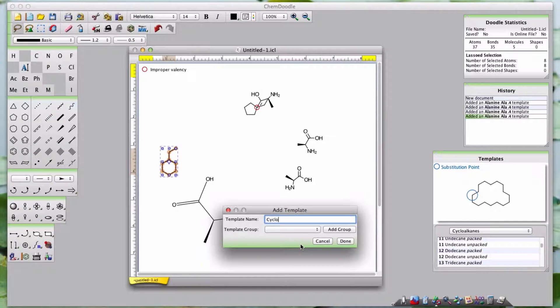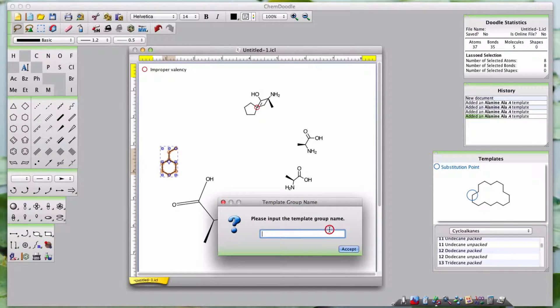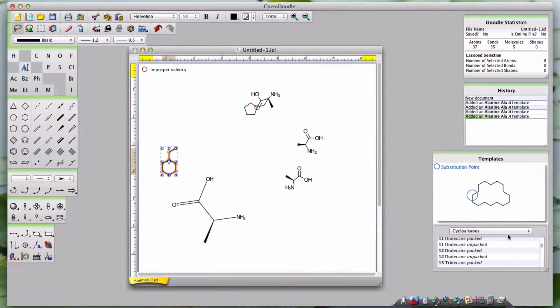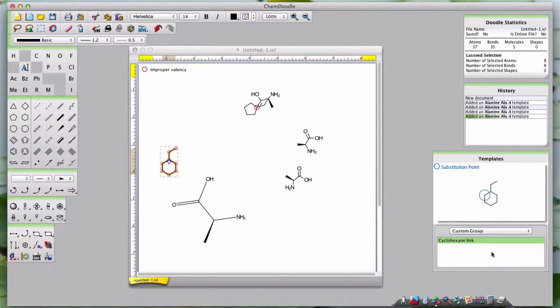You will also have to create a new group for any templates you wish to create, as they cannot be added to default template groups. Click Done when you are finished. You will then be able to find your new template in your newly created template group in the drop-down tool.